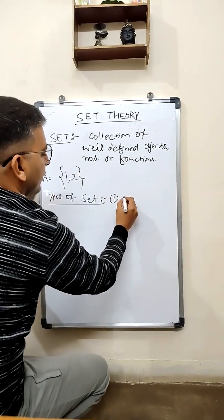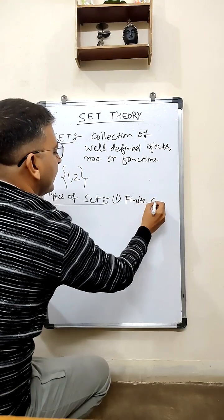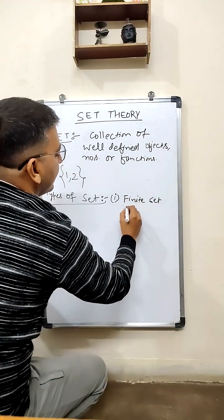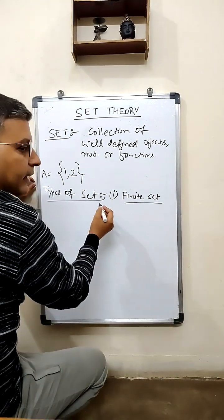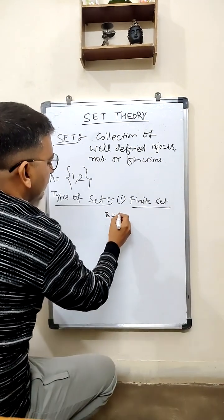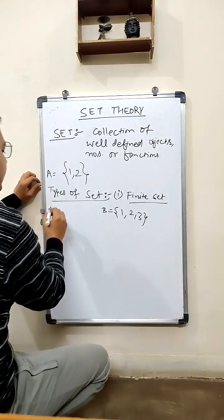First one is finite set. So as the name suggests, a set having finite number of elements is known as the finite set. For example, B is equal to {1, 2, 3}. It is a finite set.